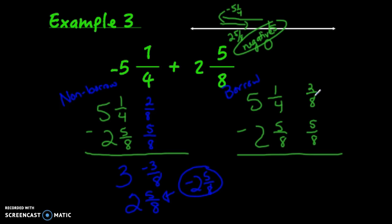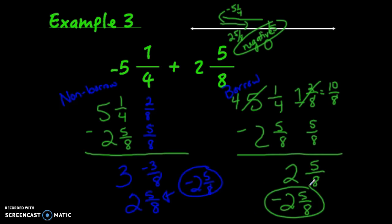take 1 away from 5 to make it 4. Converting 1 and 2/8 to an improper fraction gives 10/8. Now calculate: 10/8 minus 5/8 equals 5/8, and 4 minus 2 equals 2. So we get 2 and 5/8 again. But remember, we went 5 and 1/4 left and 2 and 5/8 right, ending up in the negatives. The final answer is negative 2 and 5/8. Same answer both ways.